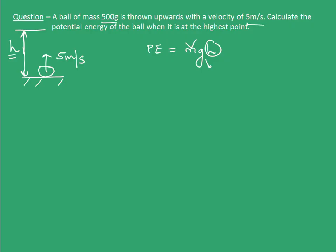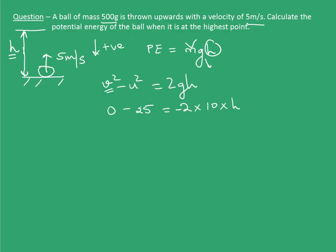How am I going to do that? I will use the formula v² minus u² equal to 2gh. At the highest point, final velocity v will be 0. The initial velocity is given as 5. So, 5² is 25, equal to 2 into 10 into h, negative. I am considering downward direction to be my positive direction. Therefore, the height measured from bottom to top will be negative, hence I have put a negative sign on the RHS. This gives me 20h equal to 25, which implies h is 5/4 meters.